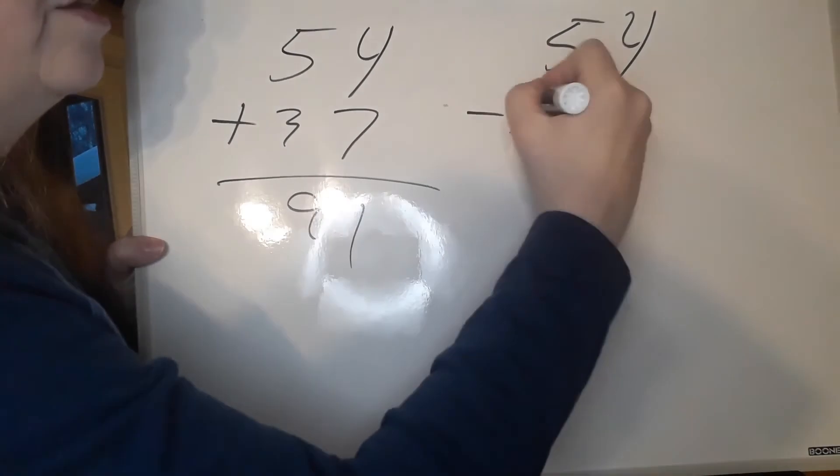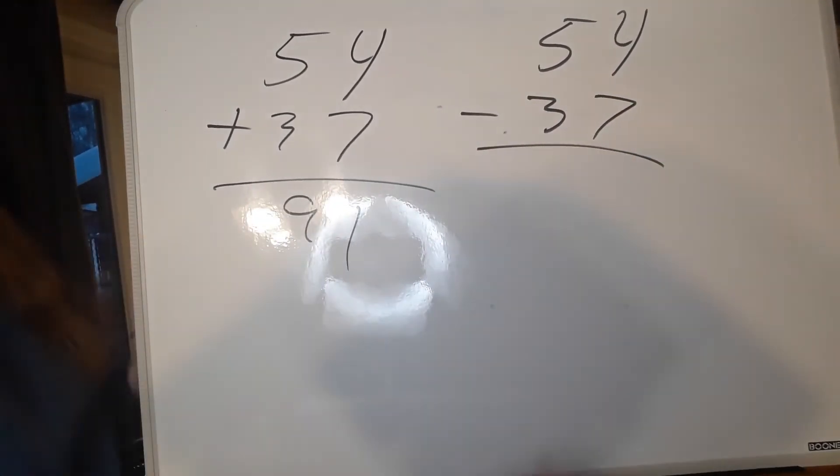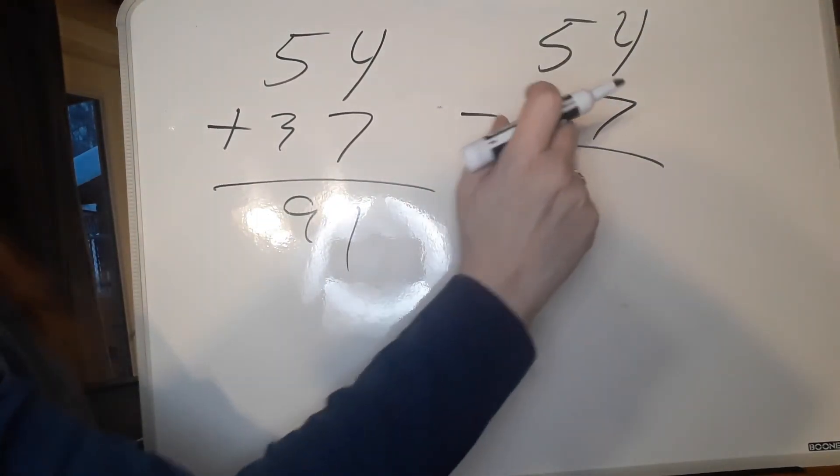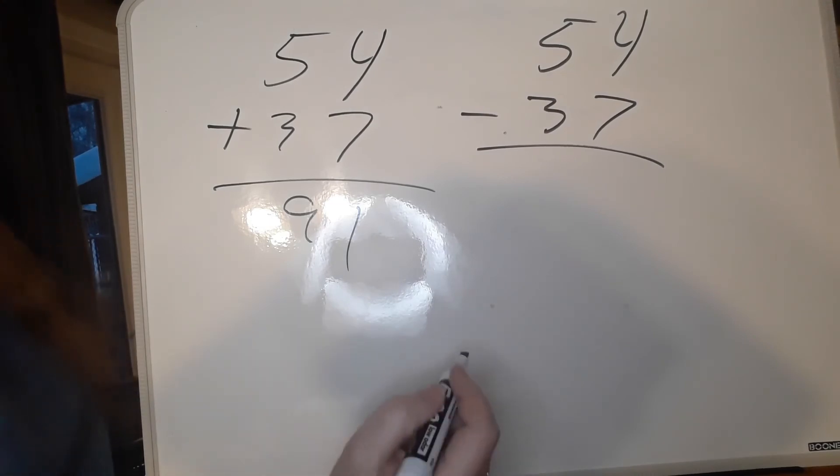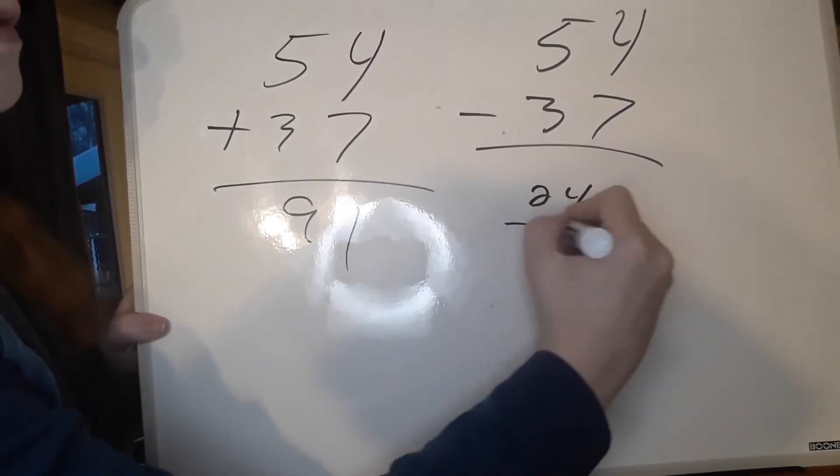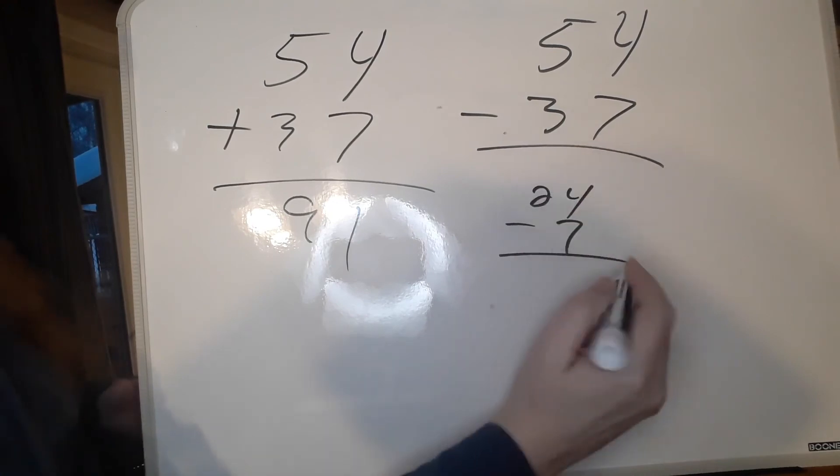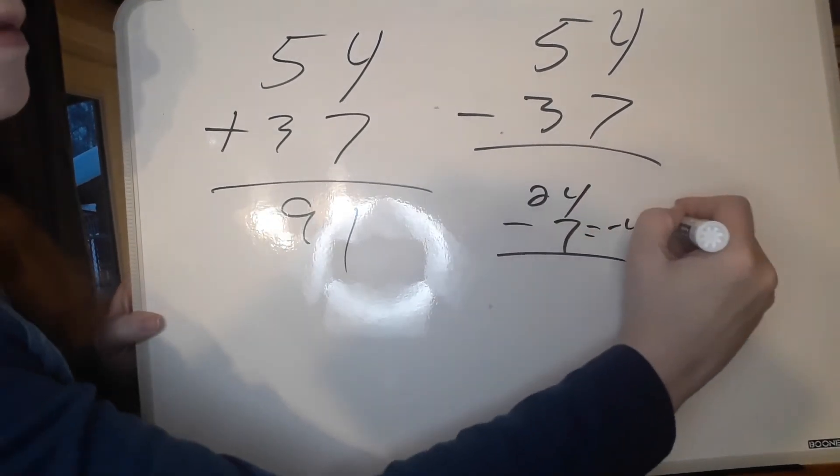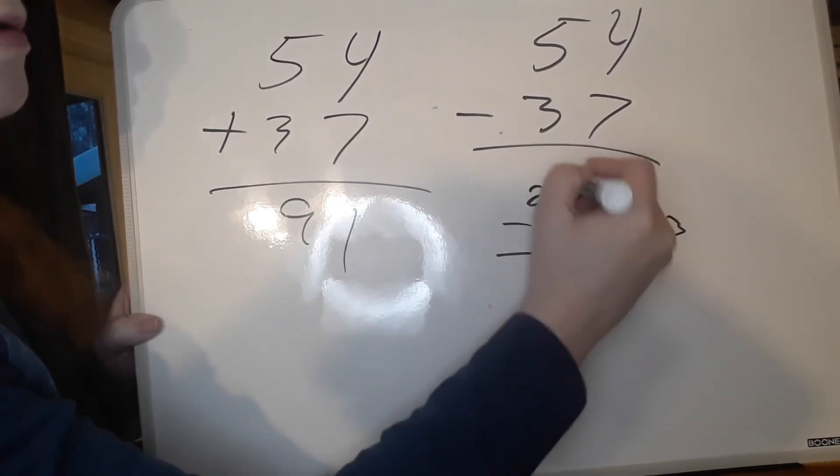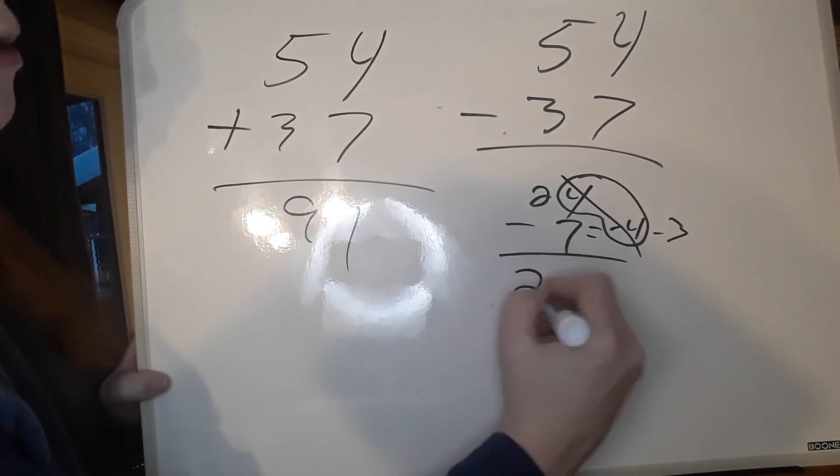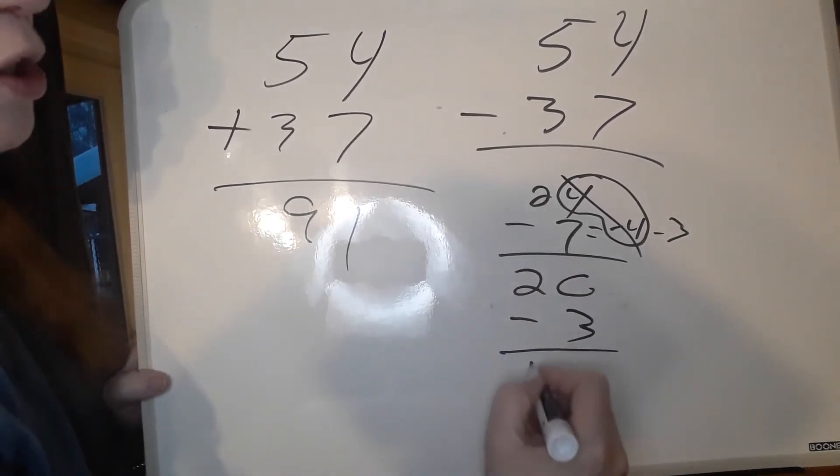54 minus 37. 54 minus 30 is 24, so we have 24 minus 7. That's what I have in my head right now. Well, 7 breaks down into 3 and 4. The 4 will cancel this, so now we have 20 minus 3 which is 17.